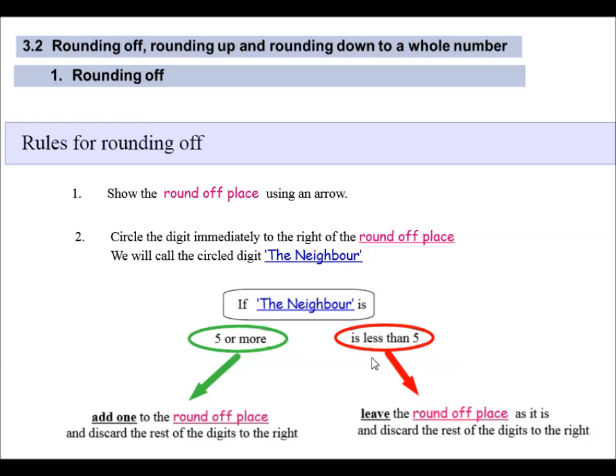The first thing we're going to do is show the round off place using an arrow. Then we circle the digit immediately to the right of the round off place and we call it 'the neighbor'. We need to inspect the neighbor. If the neighbor is five or more, we add one to the round off place and discard the rest of the digits to the right. If the neighbor is less than five, we leave the round off place as it is and discard the rest of the digits.